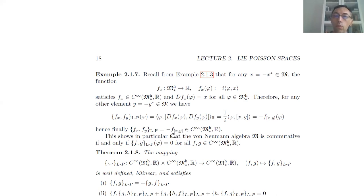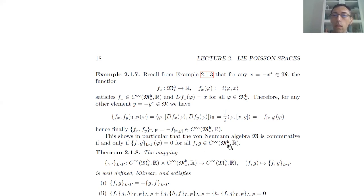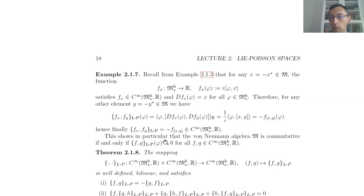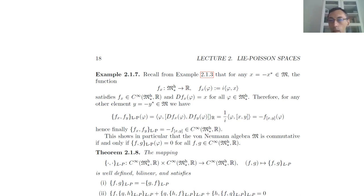We can say the correspondence x goes to f_x is an anti-morphism of the algebra. More interesting is to note that using this equation one can see immediately that if our Von Neumann algebra is commutative, all brackets are zero. So the commutativity of the Von Neumann algebra is faithfully reflected by the commutativity of this Lie-Poisson bracket. This is an indication that other properties of the Von Neumann algebra are reflected by this Lie-Poisson structure.